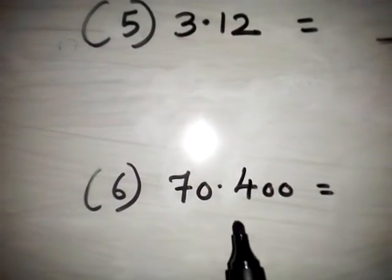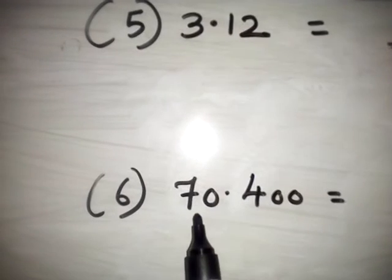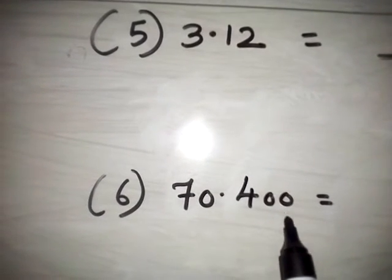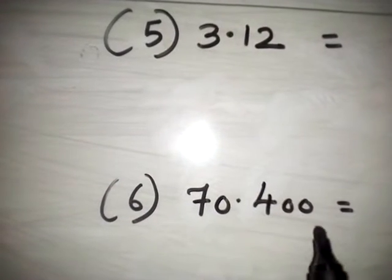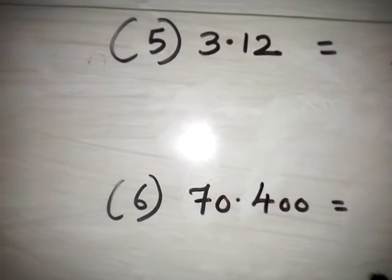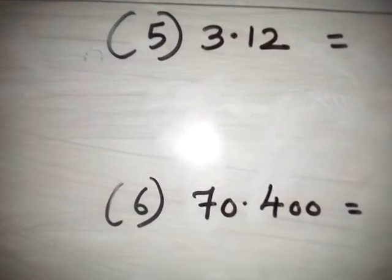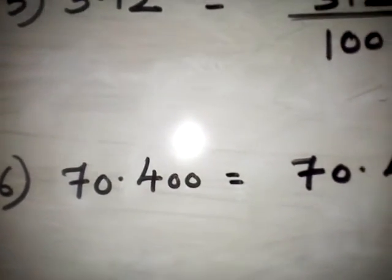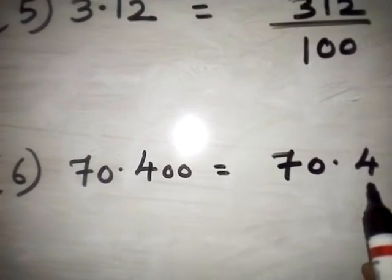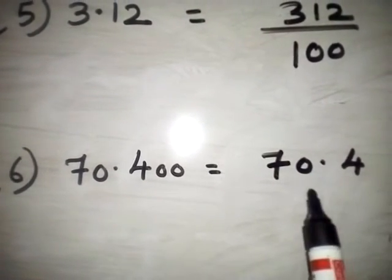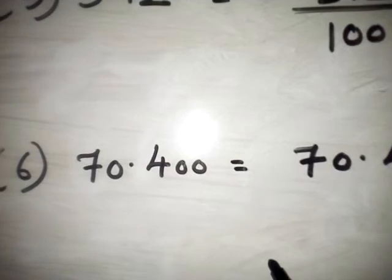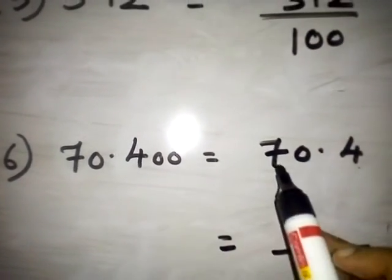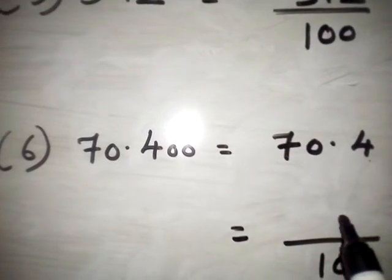6th one is very important. 70.400. Here the trailing zeros have no value, so it becomes 70.4. Now remove the decimal point. How many decimal places? 1 decimal place. If 1 decimal place is there, denominator is 10. And write this number without the decimal point in the numerator.